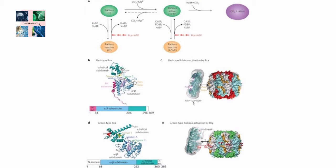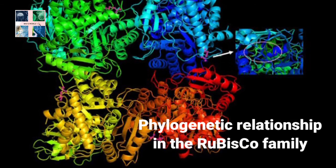X-ray structural work established that the active site is formed from the interface between the N-terminal domain of one subunit and the alpha/beta barrel of the C-terminal domain of the second subunit of the dimer, requiring at least two subunits to form the complete active site. Next is about the phylogenetic relationship in the Rubisco superfamily.